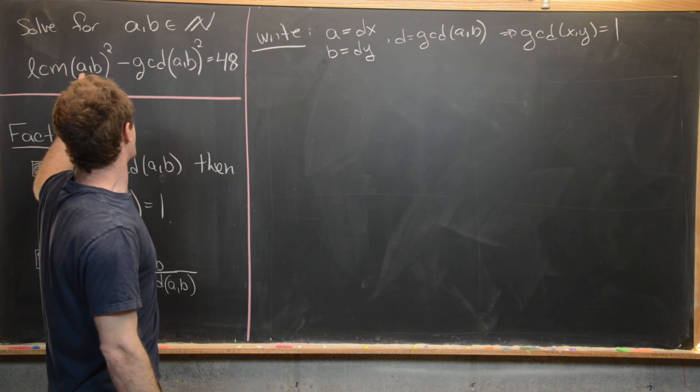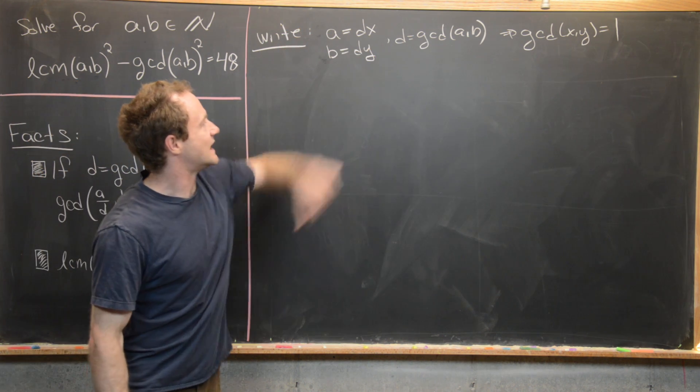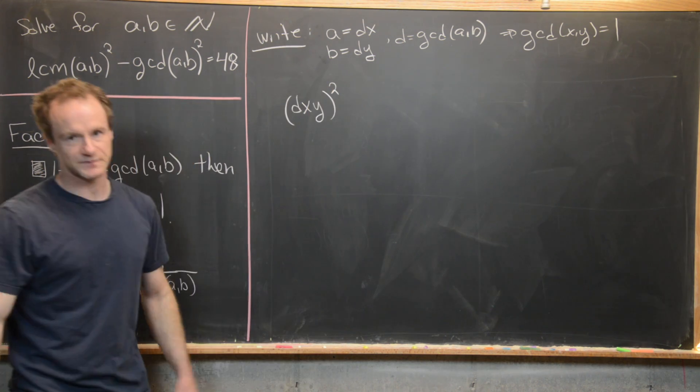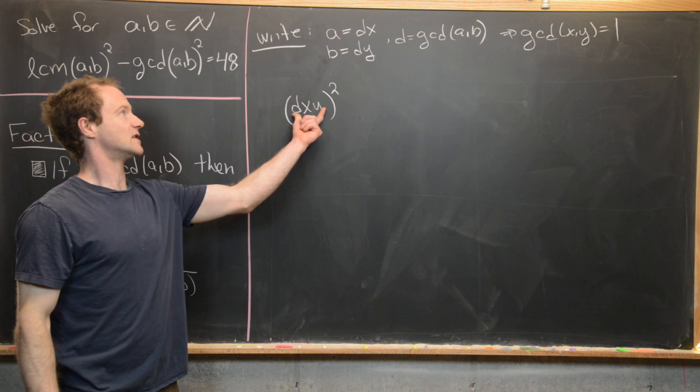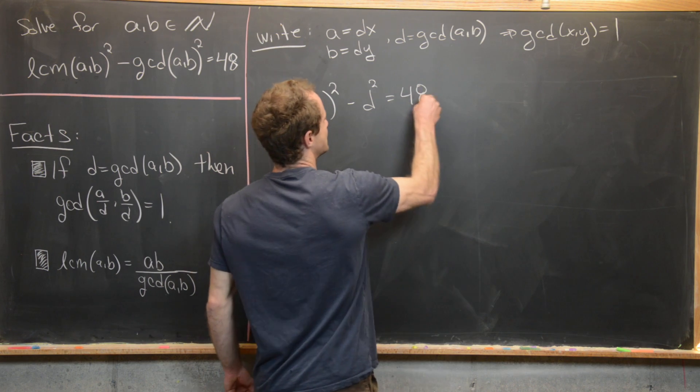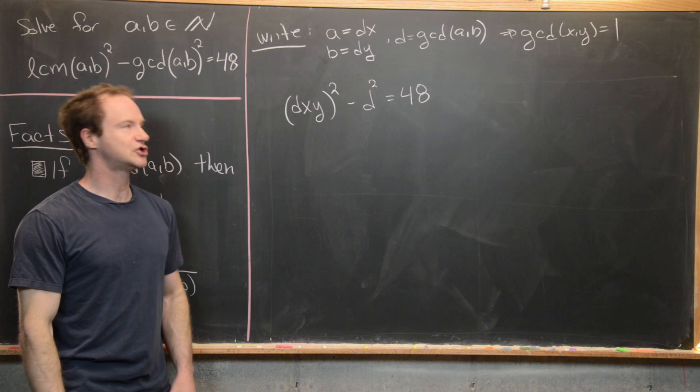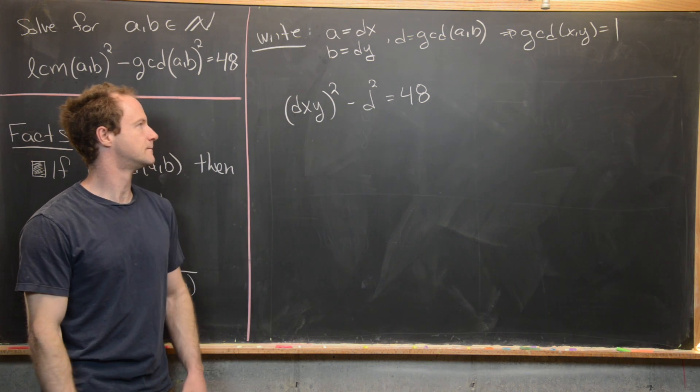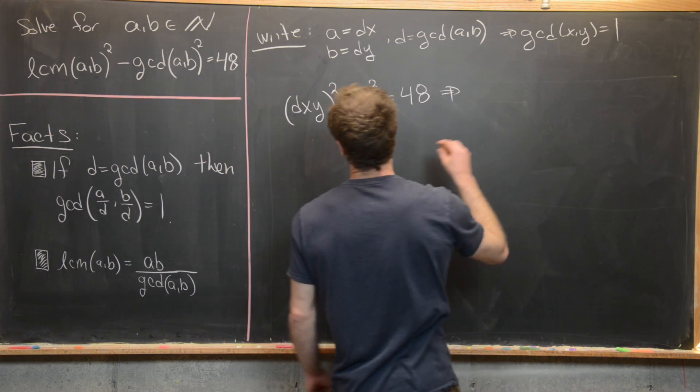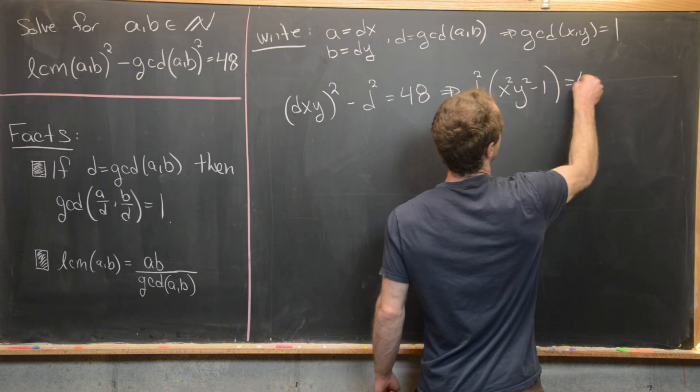So we've got this LCM of A, B squared, but notice the LCM is going to be A times B divided by D. And so that's just going to give us D times X times Y. And then we need to square it. So this is the LCM of A and B in this case. And then minus D squared equals 48. So we've translated our equation into this new equation involving the GCD and these two co-prime integers, X and Y. Next thing that I want to do is factor a D squared out of this thing. And let's see what we get if we do that. So we've got D squared and then X squared, Y squared minus 1 equals 48.